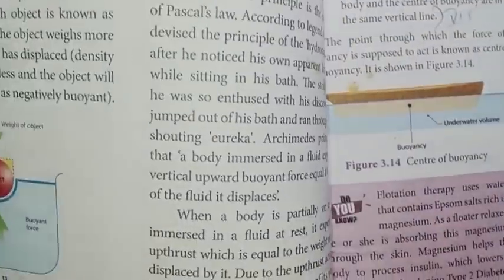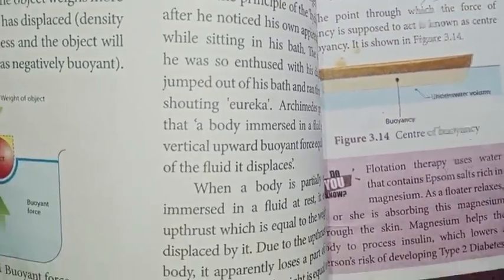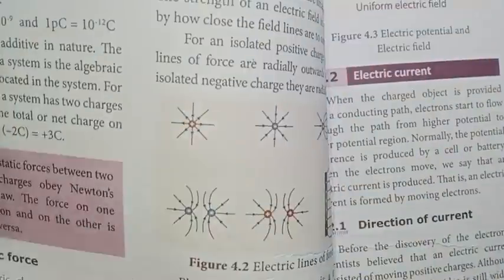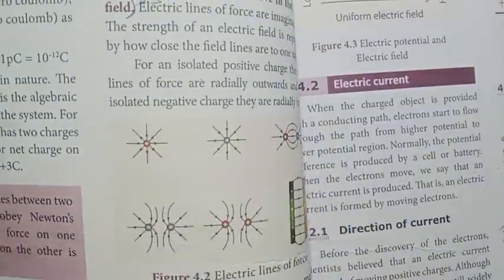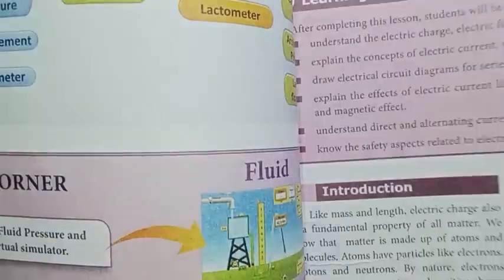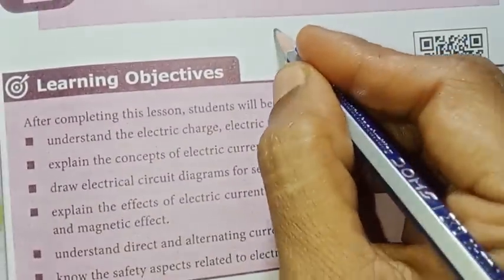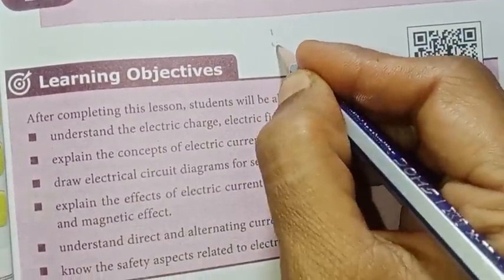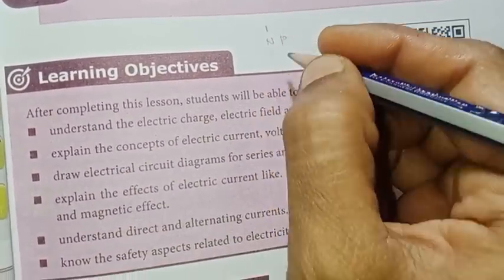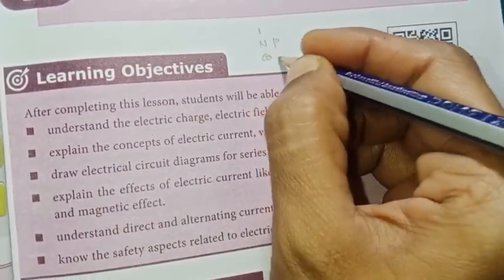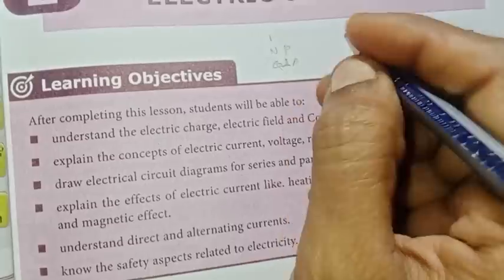Look at the 1-mark questions first. Next preference is physics and chemistry numerical problems. Then the next part is 2 marks and 5 marks. So, first do 1 marks, then numerical problems, then question answers.